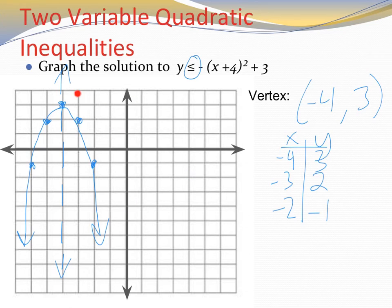So if it satisfies the inequality, gives us a true inequality statement, I would shade all out here. If it's not true, I'm going to shade in here. So let's do it. I'd have 0 is less than or equal to negative 0 plus 4 squared plus 3. So 4 squared is 16, and then make that negative. So negative 16 plus 3, so negative 13.